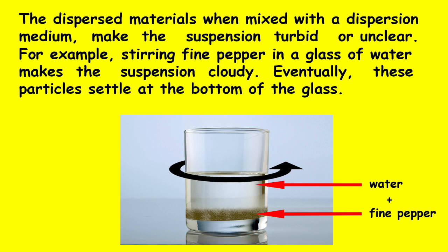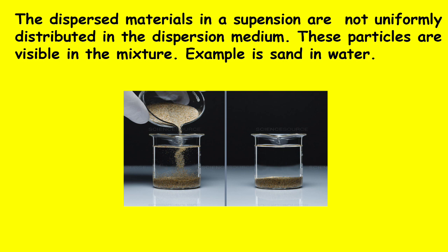For example, stirring fine pepper in a glass of water makes the suspension cloudy. Eventually, these particles settle at the bottom of the glass. The dispersed materials in a suspension are not uniformly distributed in the dispersion medium. These particles are visible in the mixture. An example is sand in water.